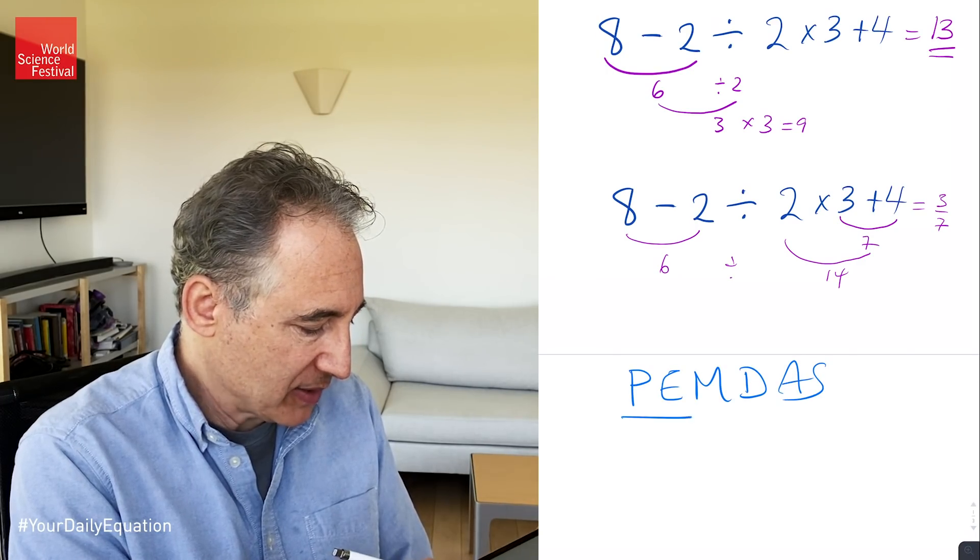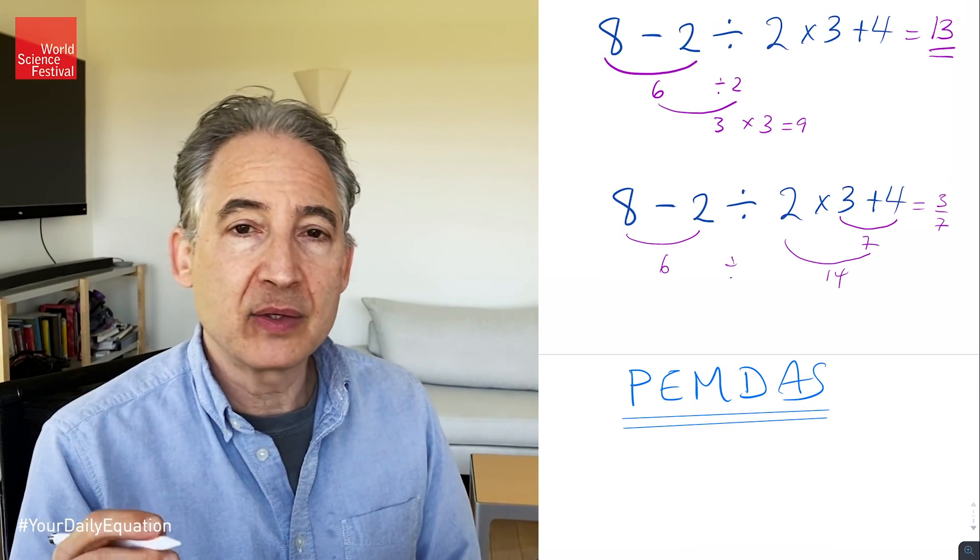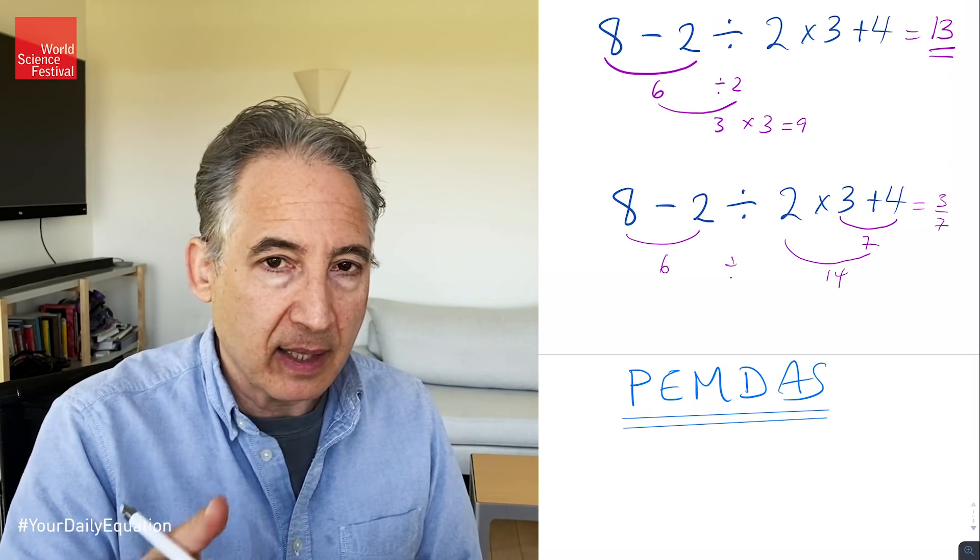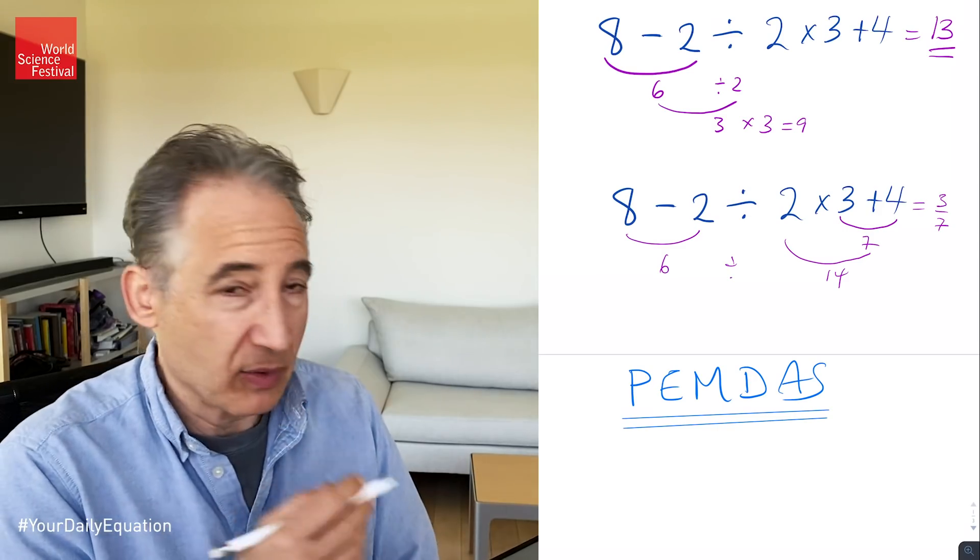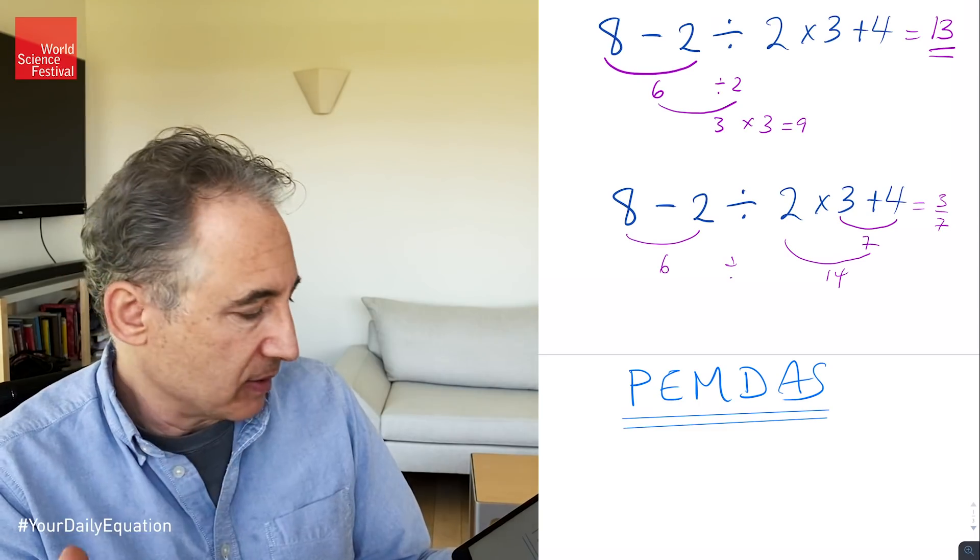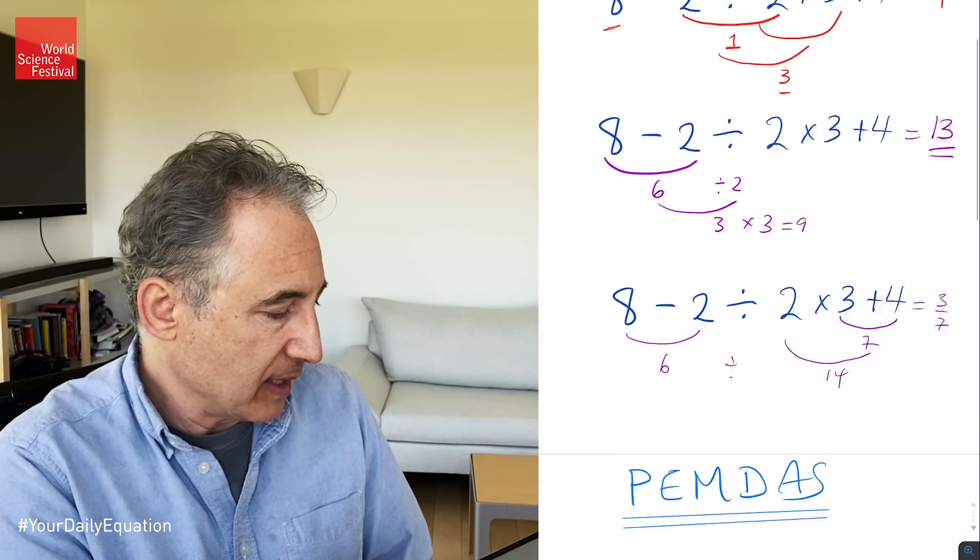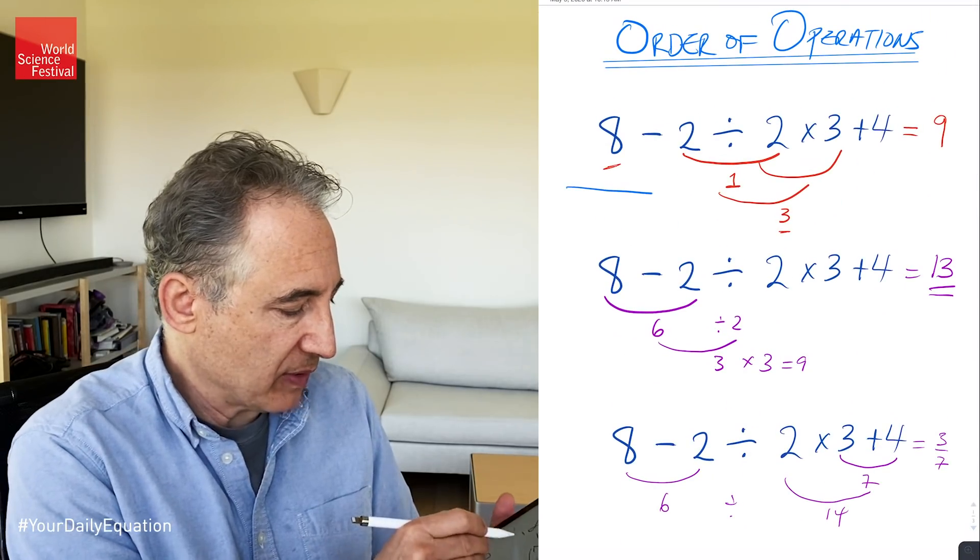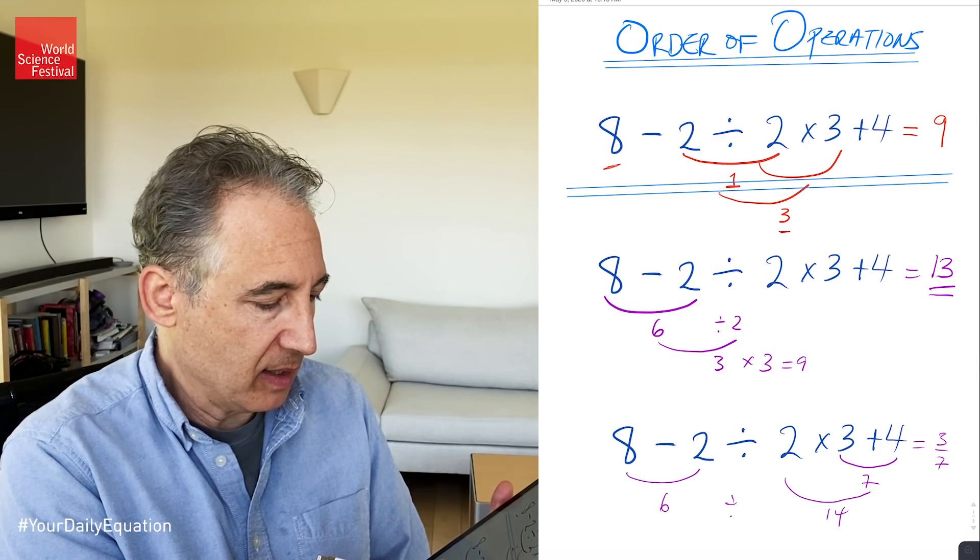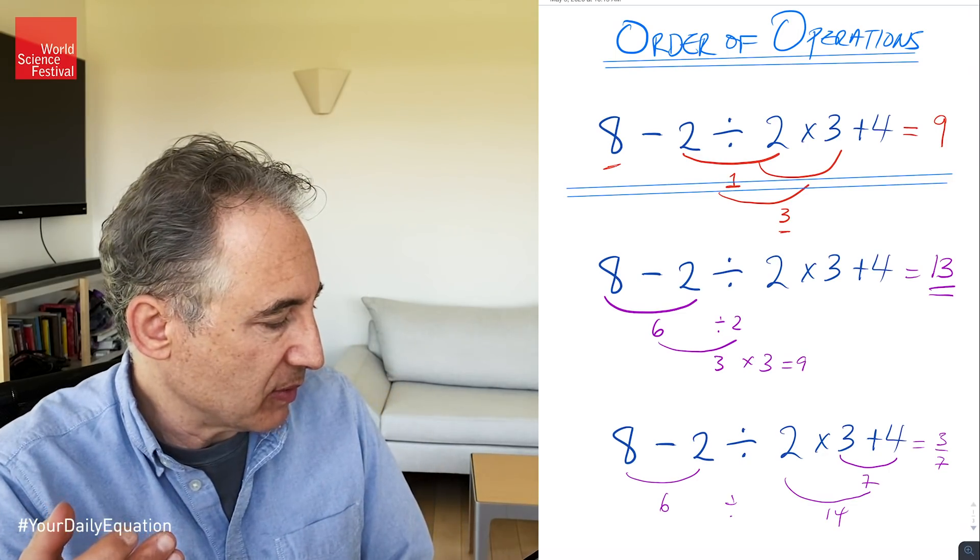And PEMDAS is an arbitrary rule that tells you the order of operations to employ in any given mathematical sentence. So, the P, parentheses, E, exponents, M and D, multiplication and division, and the A and S, addition and subtraction. So the idea is, if you're given some sort of mathematical sentence like this, you employ PEMDAS to figure out which order of operations to employ.